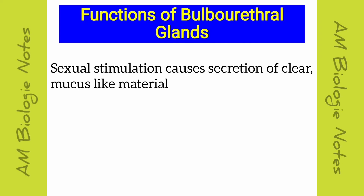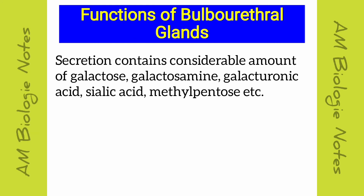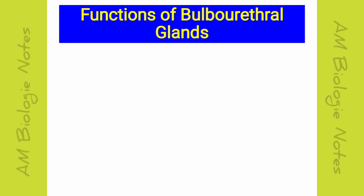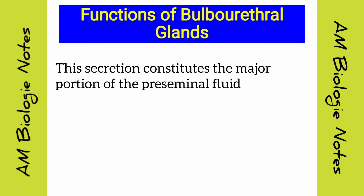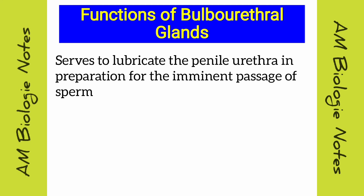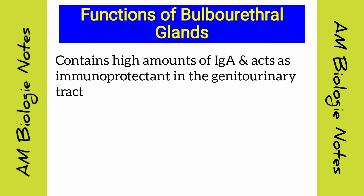Sexual stimulation causes bulbo-urethral glands to secrete a clear mucus-like secretion. The secretion contains considerable amounts of galactose, galactosamine, galacturonic acid, sialic acid, methylpentose, etc. This secretion constitutes the major portion of the pre-seminal fluid. It serves to lubricate the penile urethra in preparation for the imminent passage of sperm. It also neutralizes any traces of acidic urine, and contains high amounts of IgA, acting as an immunoprotectant in the genitourinary tract.